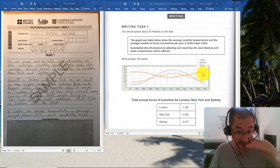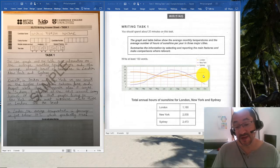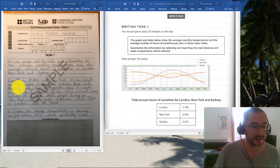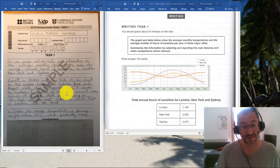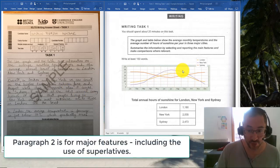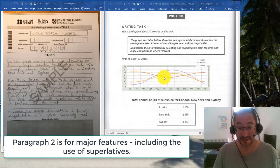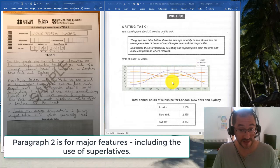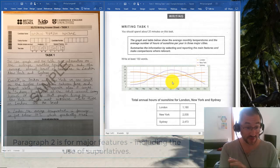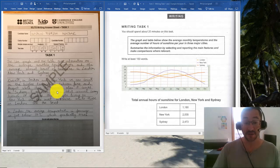In your second paragraph, this is fine. You've talked about some major features and you've pulled out that New York and London have higher temperatures in what is summer for them, whereas in Sydney it's lower because that's going through winter.